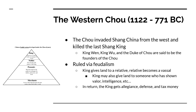On the land that the king gives to these nobles are peasants. The peasants are going to work the land in exchange for shelter, protection, and food. Surprisingly, at the very bottom of the Chinese feudal system are merchants. Merchants were seen as lower than peasants because merchants benefited off the work of other people.